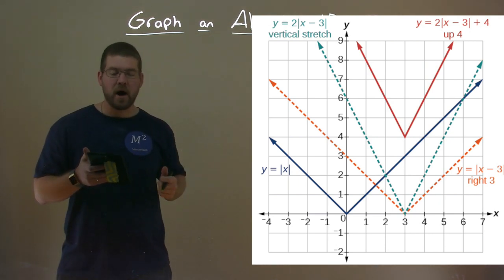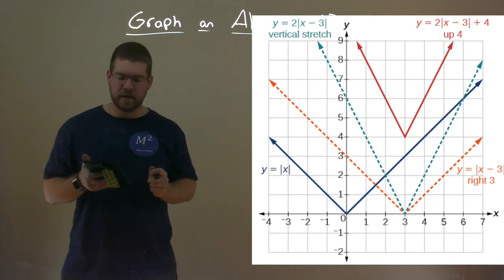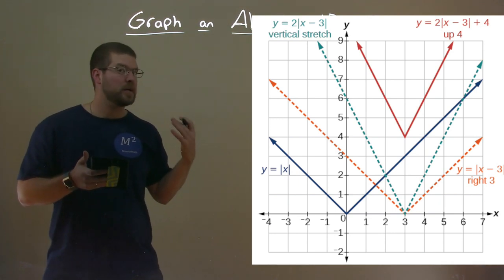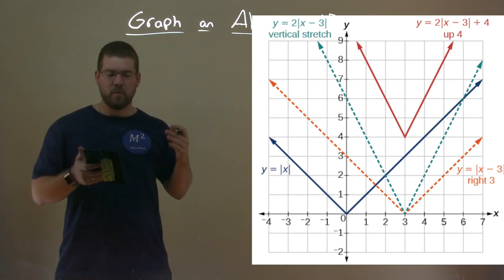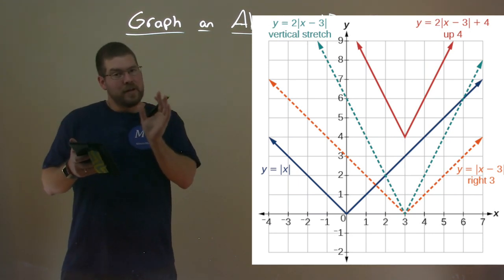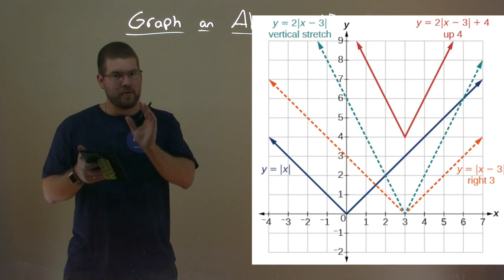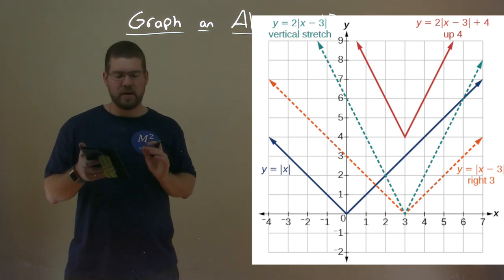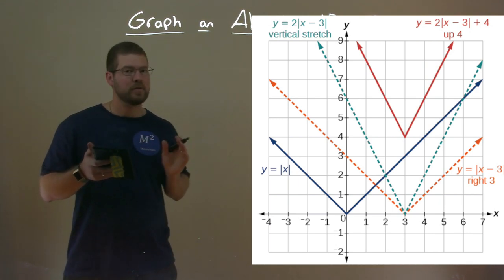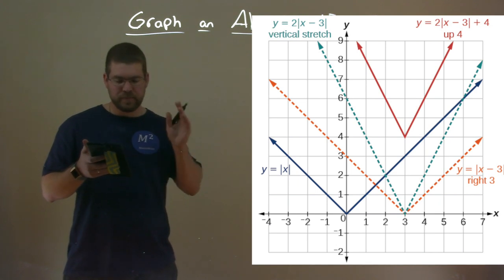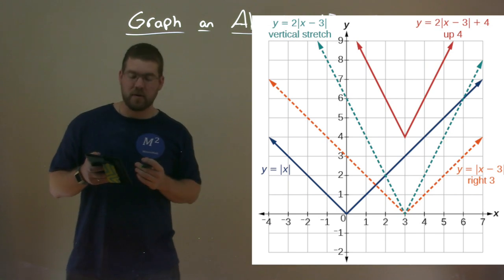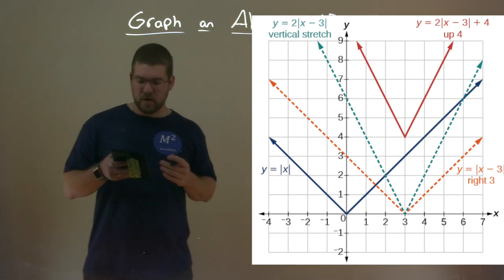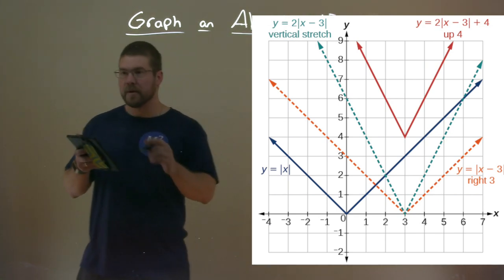So we see the same vertex there as the orange line. But a vertical stretch of two is being multiplied on the outside. And we can see that the V part kind of comes in there. Then we want to move up four units, moving that vertex again. And so we add that plus four to get to the red line that is right there. And so we can see how we transitioned from our toolkit, our regular function, y equals absolute value of x. And with all those steps, we got to the red function, y equals 2 times the absolute value of x minus 3 plus 4 to get that graph.